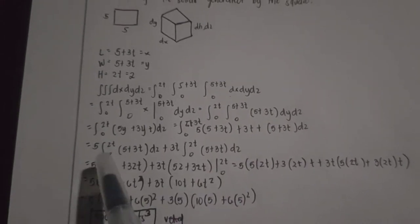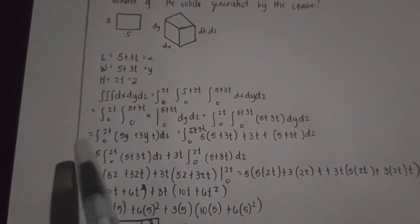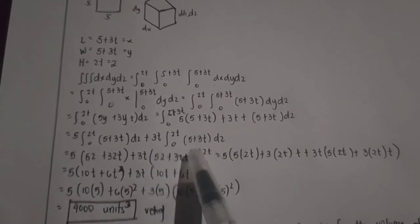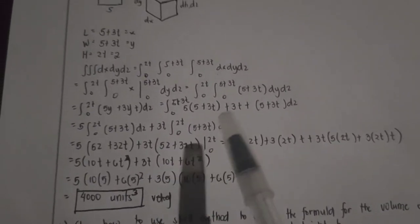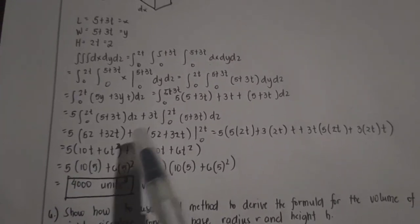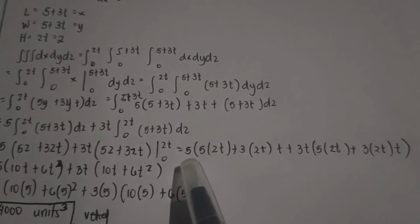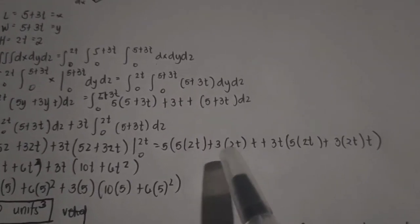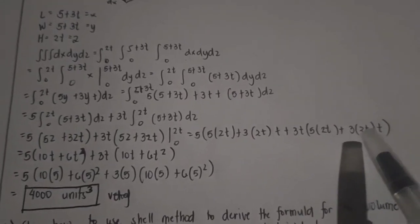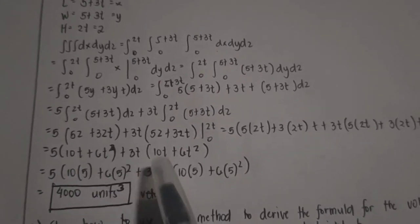We integrate by parts, putting the constants 5 and 3t to the left side. So we have 5 times the integral of (5 plus 3t) dy from 0 to 2t, plus 3t times the integral of (5 plus 3t) dy from 0 to 2t. Evaluating gives 5 times (5z plus 3z) from 0 to 2t, which simplifies to 5 times the quantity (10t plus 6t squared) plus 3t times the quantity (10t plus 6t squared).